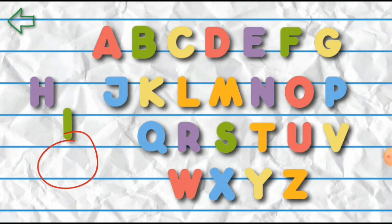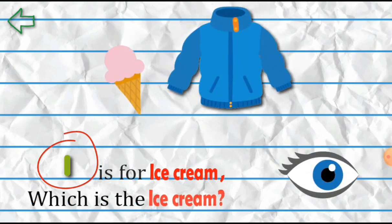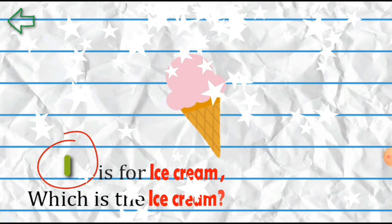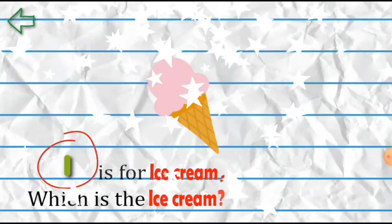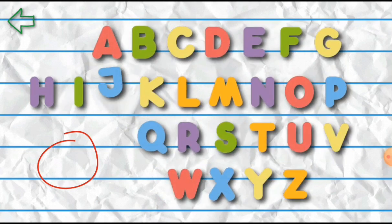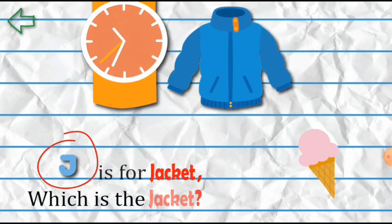I is for Ice Cream. Which is that? Ice Cream. J is for Jacket. Which is that? Jacket.